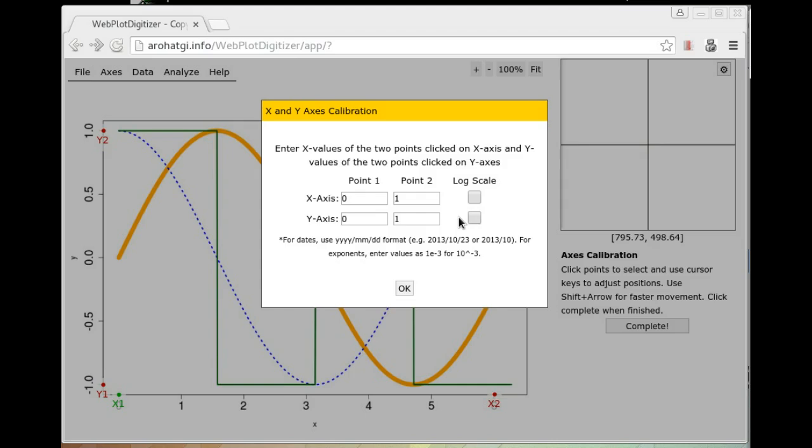Next specify the values at the points that you have selected. Here we selected zero, six and minus one and one on the Y axis. If either X or Y axis is log scale, then check the appropriate checkbox. You can also specify dates as the values here. They have to be specified in a specific format in year month date or just year month format. You can also enter values as exponents such as for 10 to minus three, just enter one minus three. Just make sure not to enter the caret character because that is not allowed.